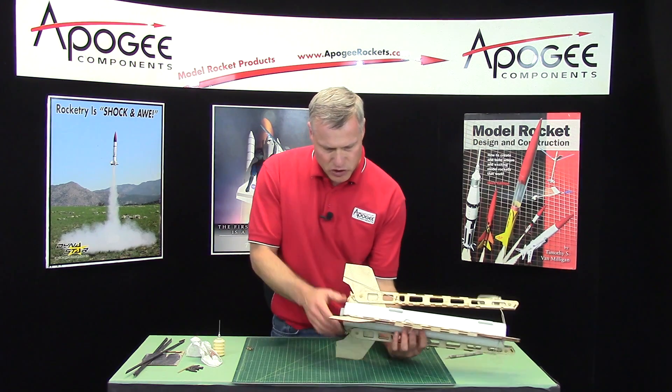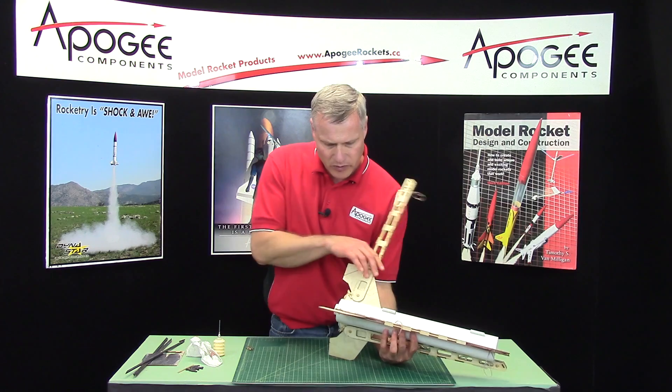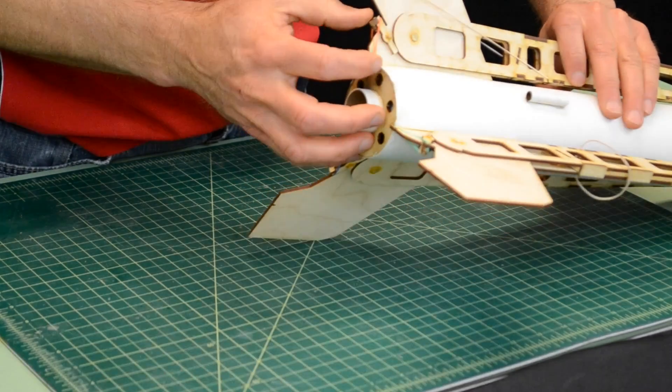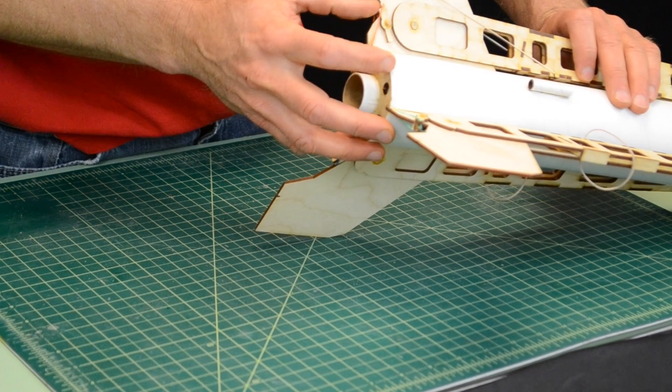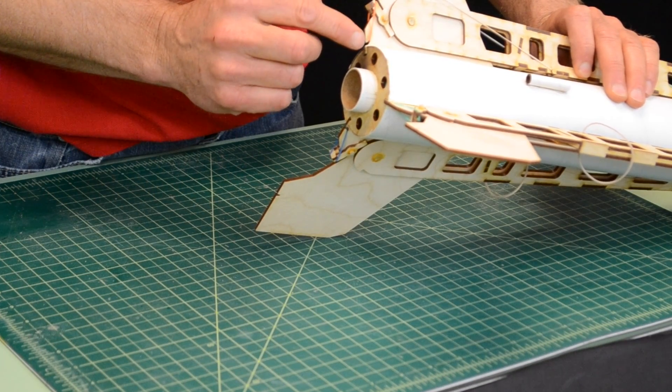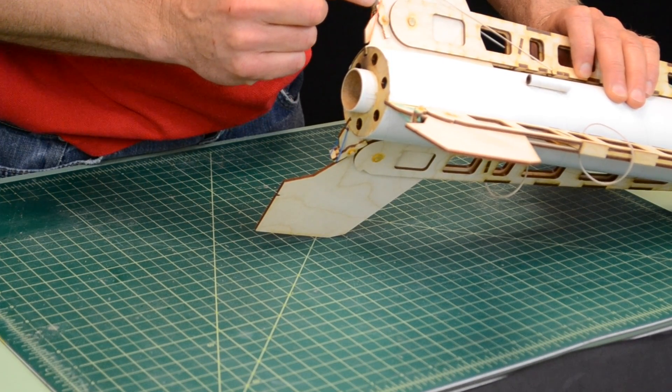Here's where the latch is on the rocket. And what it does, it acts like a little cam. Hopefully you can see this in the video. You can see that it's activated with a little rubber band that goes to the bottom of the fin and then across the latch.